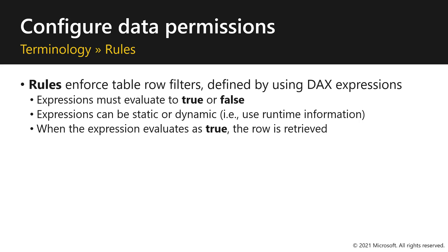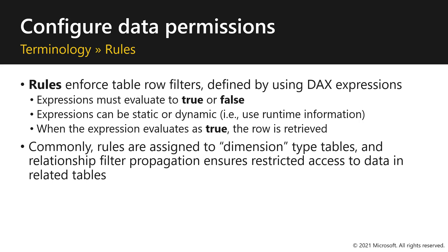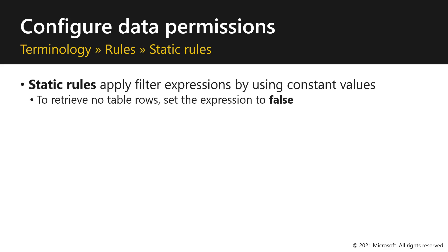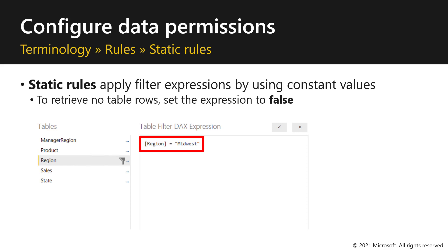Roles enforce table row filters defined by DAX expressions. These expressions must evaluate either to true or false — when the expression evaluates as true, the row is retrieved from the dataset. Rules are commonly assigned to dimension type tables, and relationship filter propagation ensures restricted access to data in related tables. Dimensions are the entities you're modeling — products, places, people, and concepts. Static rules apply filter expressions using constant values. To retrieve no table rows, you can set a simple filter of false. In this example, there is a filter on the region table filtering the region column by Midwest, meaning anyone mapped to this role will only ever see sales for the Midwest region.